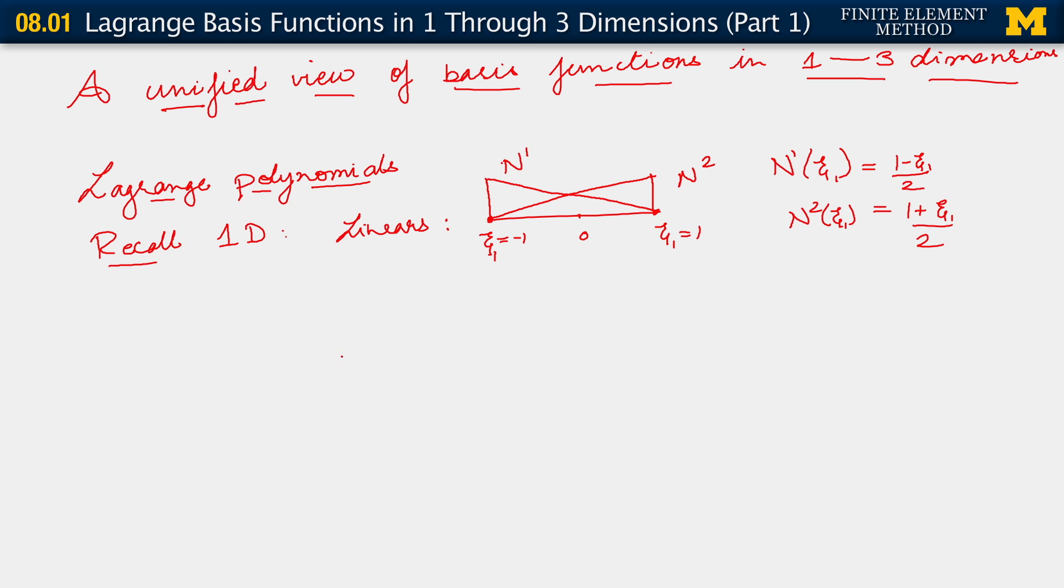And then we went on to develop quadratics. We have our element. C1 is minus 1, c1 is 0, c1 is 1.